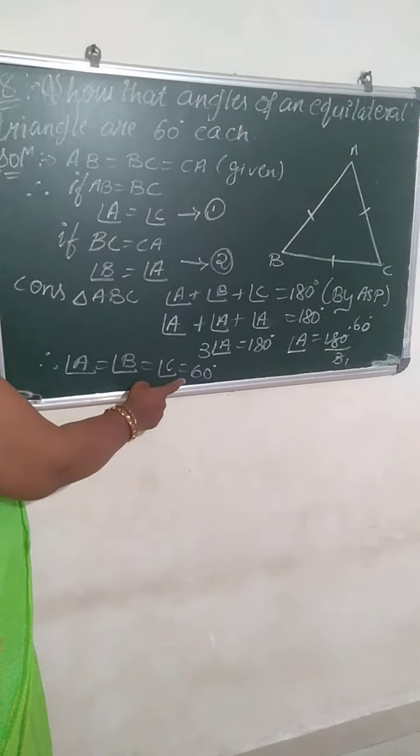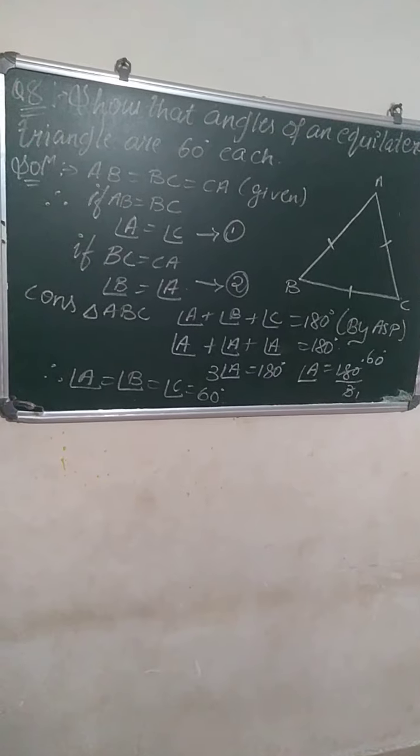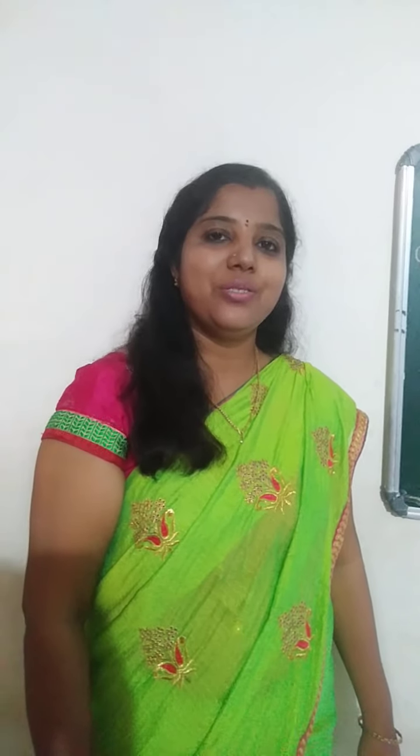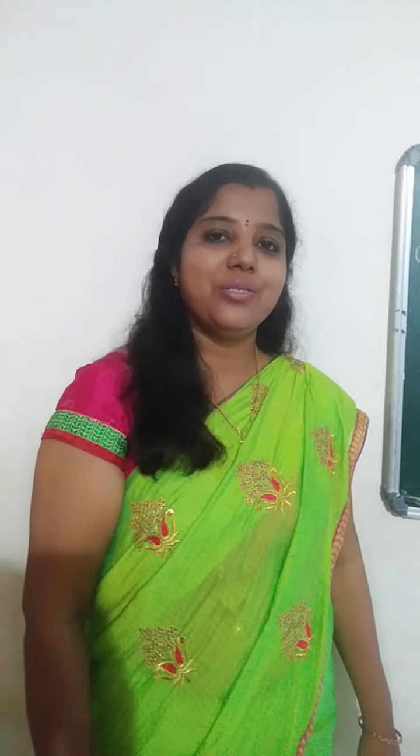When three jumps to the other side, it goes to the denominator. Cancelling three: 180 divided by 3 equals 60. So all three angles are equal: angle A equals angle B equals angle C, all equal to 60 degrees. I hope you all understood the sum, children. If you have any doubt, kindly call me. Thank you, children.